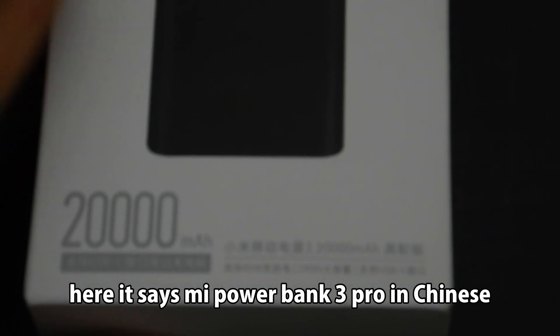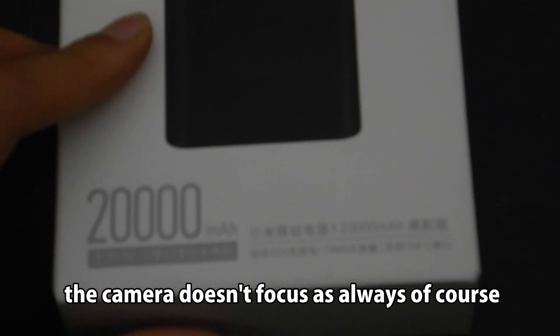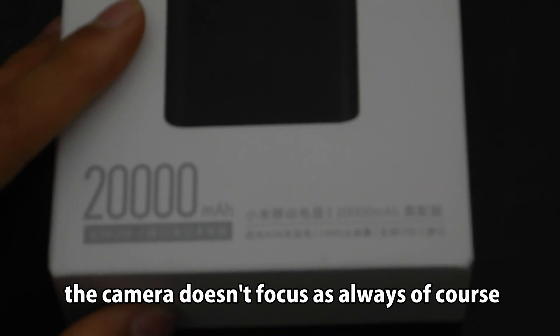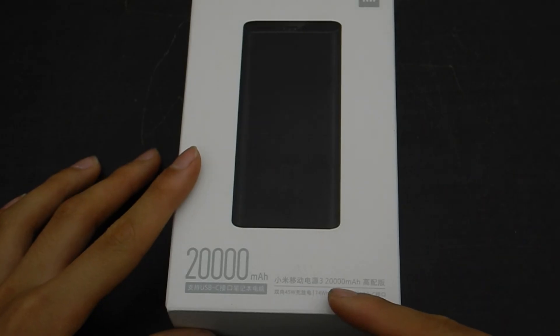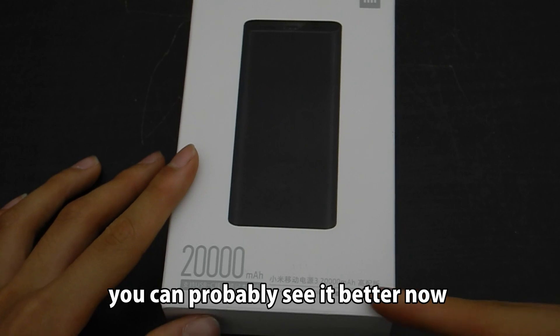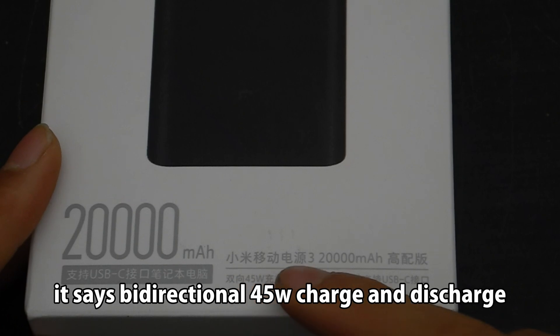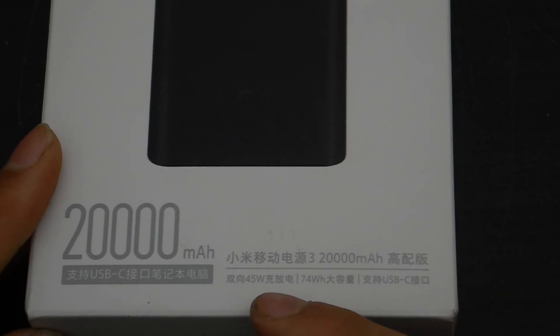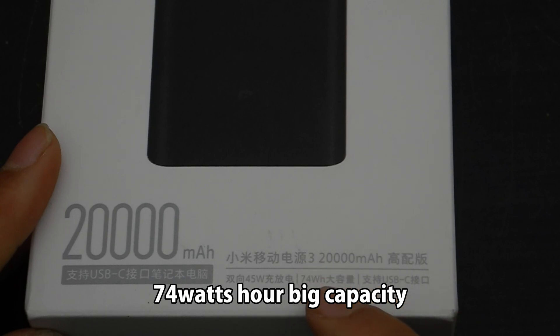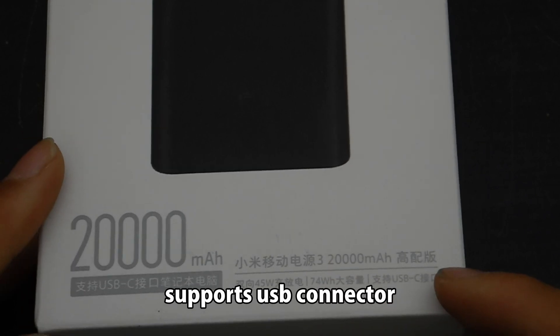Here it says Mi Power Bank 3 Pro in Chinese. 20,000 mAh. The camera doesn't focus as always of course. You can probably see it better now. It says bi-directional 45W charge and discharge. 74Wh big capacity.